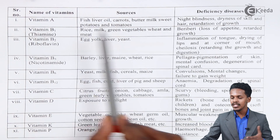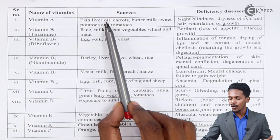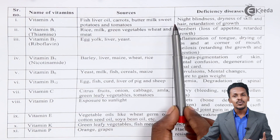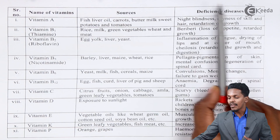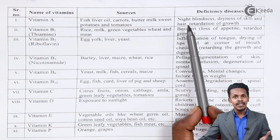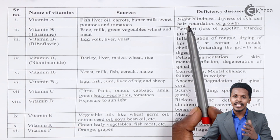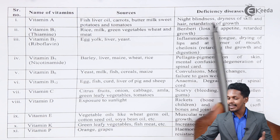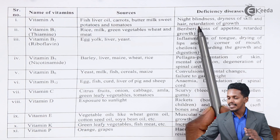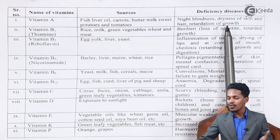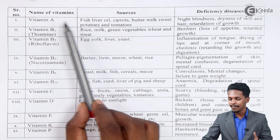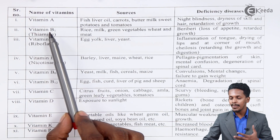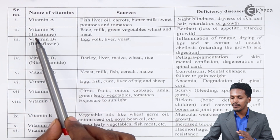Vitamin A is found in fish liver oil, carrots, buttermilk, sweet potatoes, and tomatoes. The deficiency diseases that can be caused if it is not present in sufficient quantity in our body are night blindness, dryness of skin, and retardation of growth.